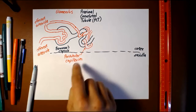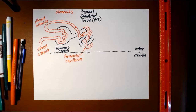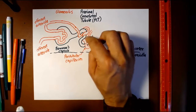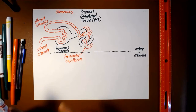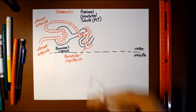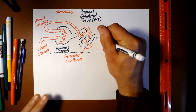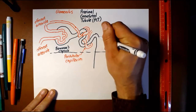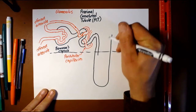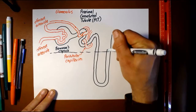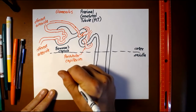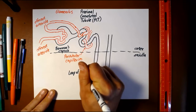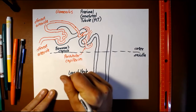Where the blood and the urinary tubule come into close contact, that's a good place for reabsorption and secretion to happen. After the proximal convoluted tubule, the urinary tubule goes through this interesting thing where it forms a long turn that goes at least a little bit — and in some nephrons quite deeply — into the medulla. This structure is the loop of Henle, or sometimes just called the nephron loop.